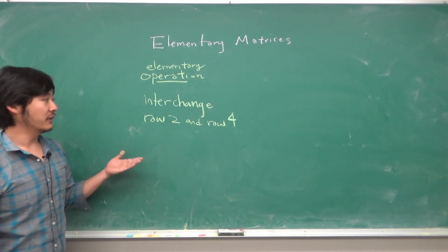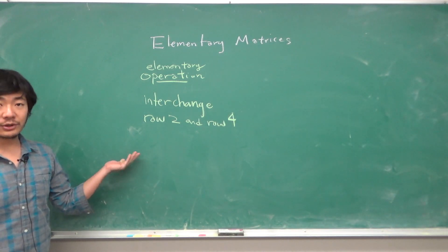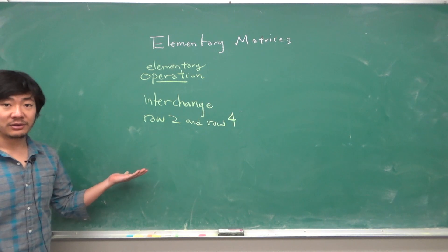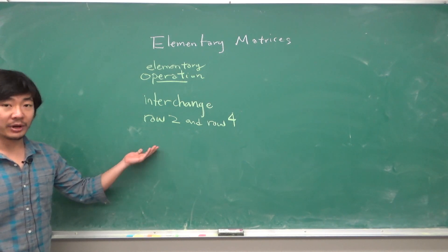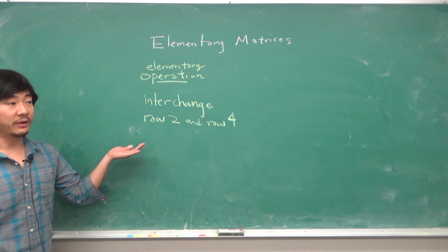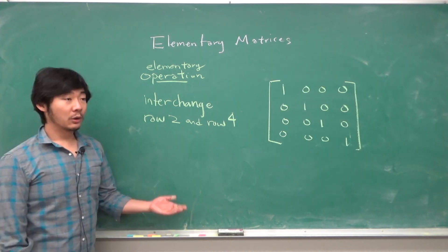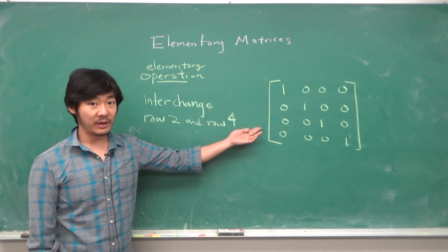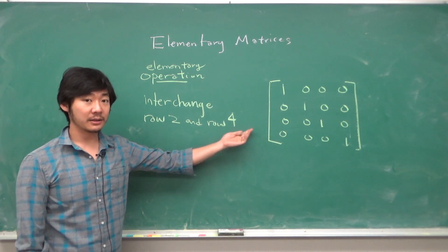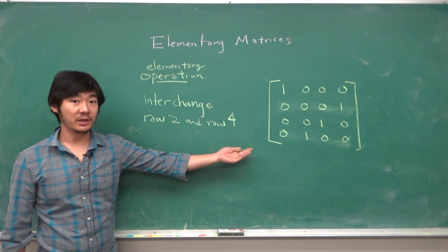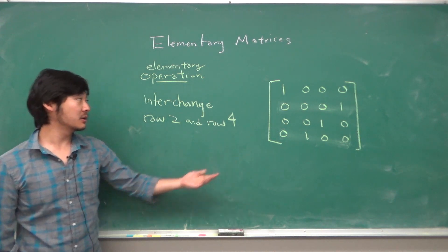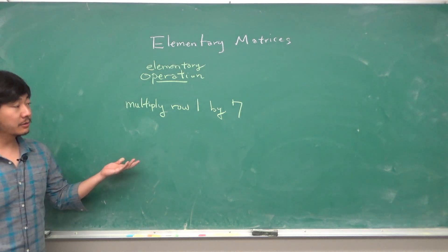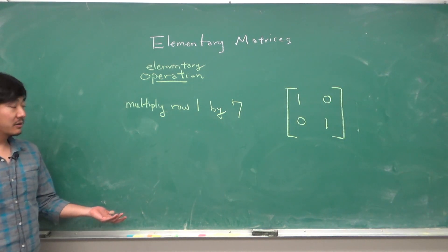What about the other two types? If we want the elementary operation of interchanging, say, row two and row four, we first need to specify the size of the matrices we are dealing with. Let's say we are dealing with a four by four matrix. Then we just do this row operation to the identity matrix of the corresponding size, and we get this matrix, which will be the elementary matrix that corresponds to this row operation.